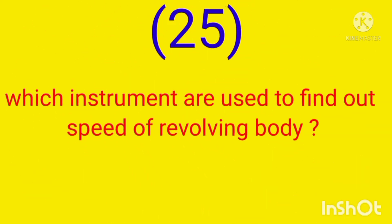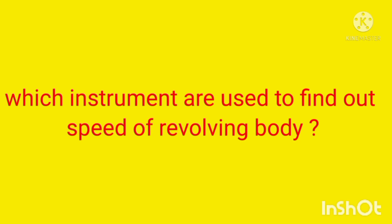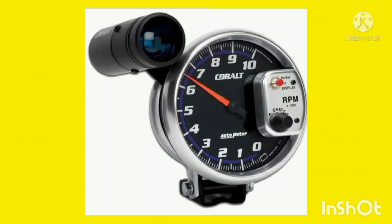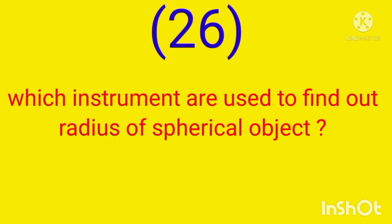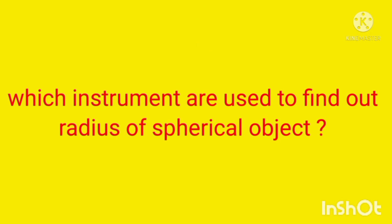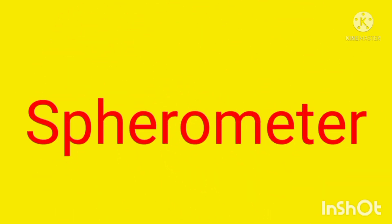Which instrument is used for finding out the speed of a revolving body? Thermoscope. Which instrument is used for finding the radius of a spherical object? Starometer.